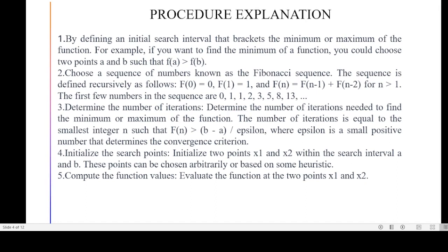Fibonacci sequence first few numbers are 0, 1, 1, 2, 3, 5, 8 and so on. Then we check the number of iterations. It is equal to the smallest integer n such that f(n) is greater than (b - a) divided by epsilon. Epsilon is a small positive number that determines the convergence criteria.